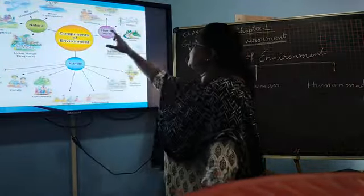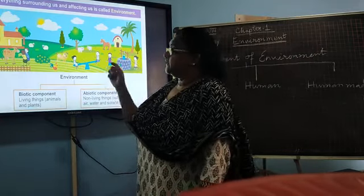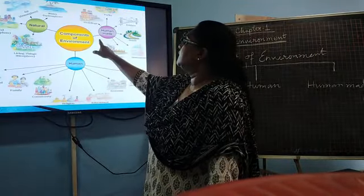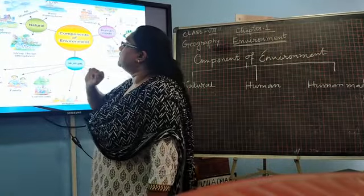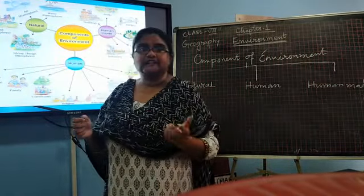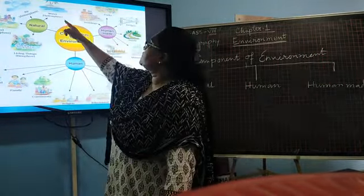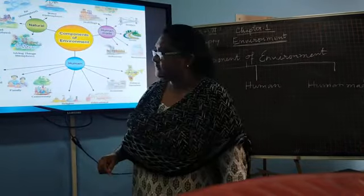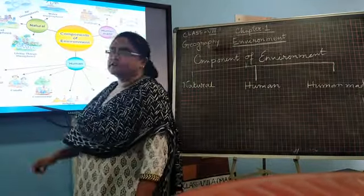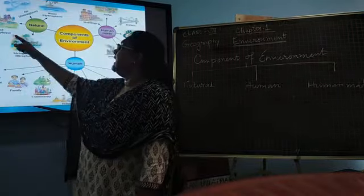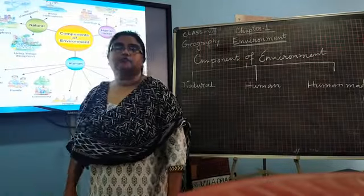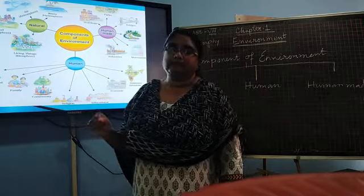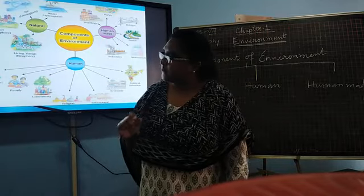See the diagram. In this picture you see the natural environment. Water is also known as hydrosphere. Air is known as atmosphere. Land is known as lithosphere. And living things are known as biosphere. All are parts of the natural environment.